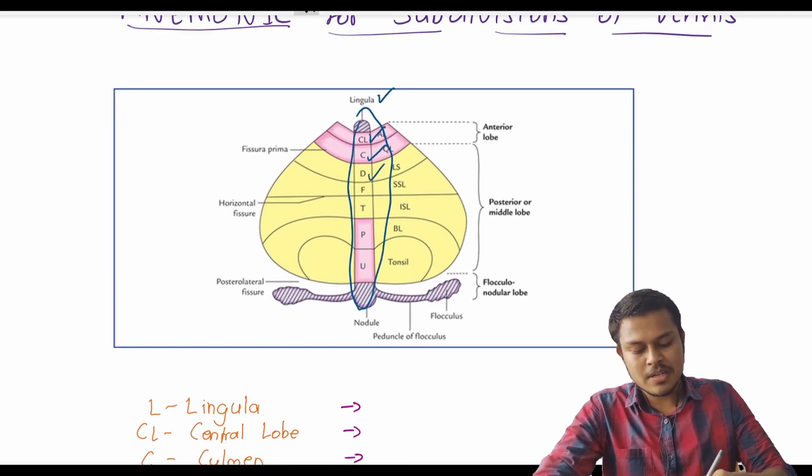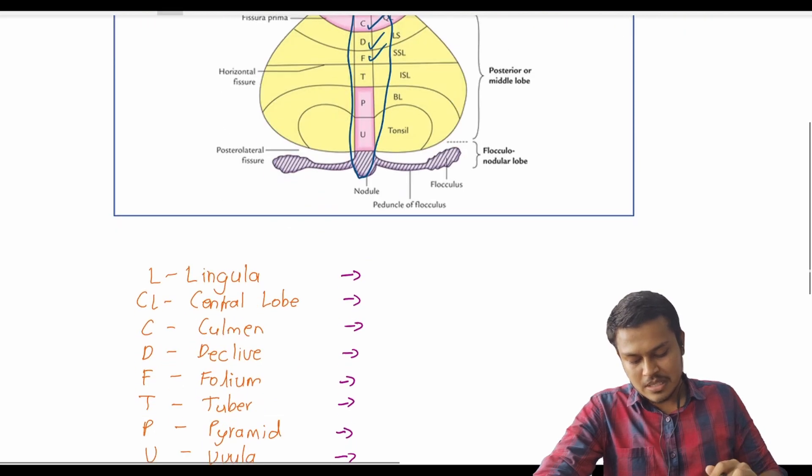Lingula, central lobe, culmen, declive, folium. There are so many, as you can see.